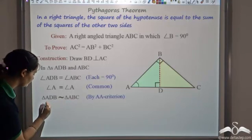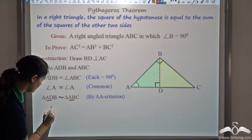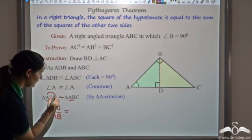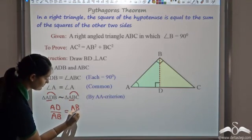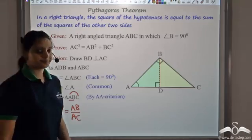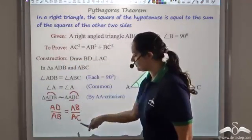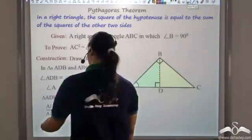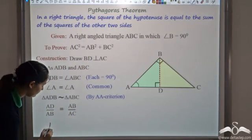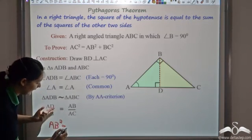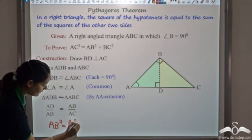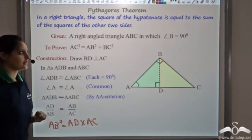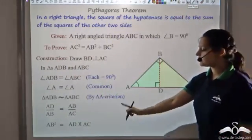Since the corresponding sides are proportional, we get AD/AB = AB/AC. Cross-multiplying gives AB² = AD × AC. Let's call this equation (1).